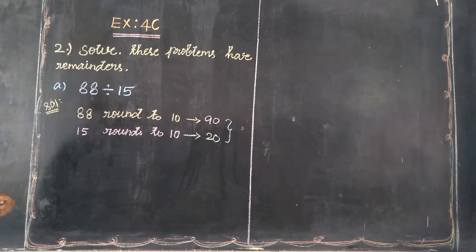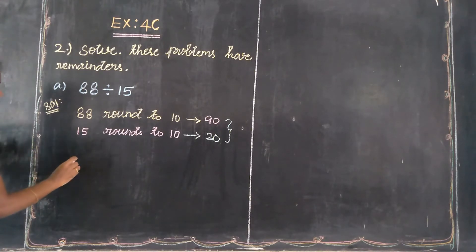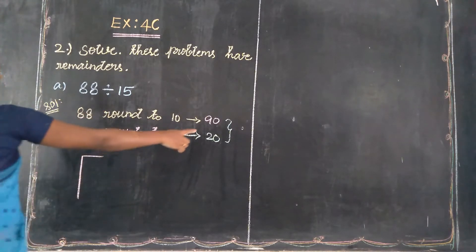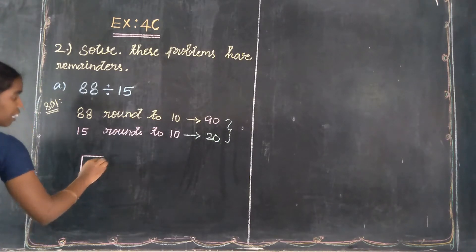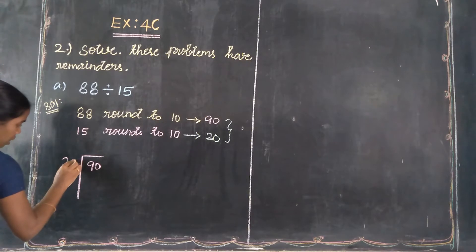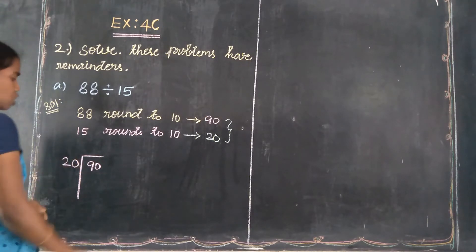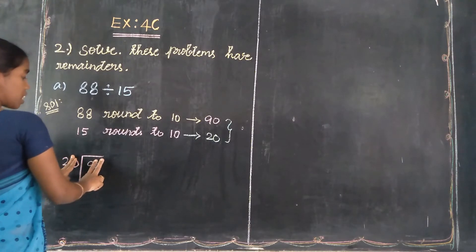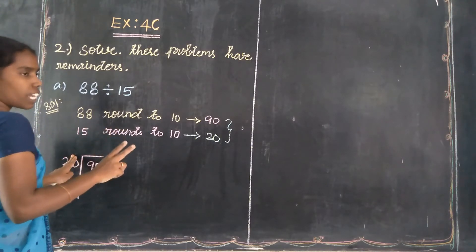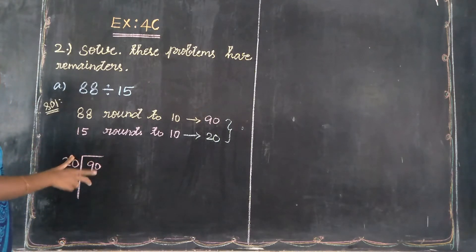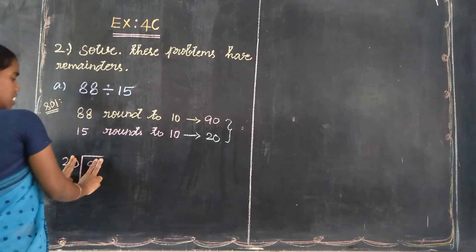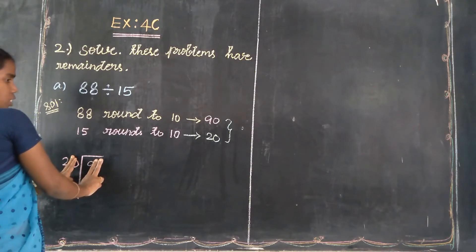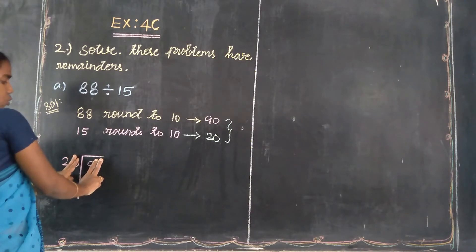To estimate, divide these rounded numbers. The dividend rounded value is 90 and the divisor rounded value is 20. Listen students — the 10th place is the base, so the 10th place value of the divisor is 2. Then use the 2-times table to get 9.